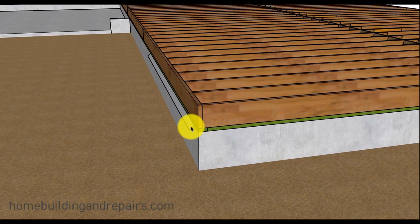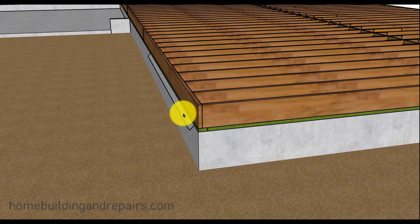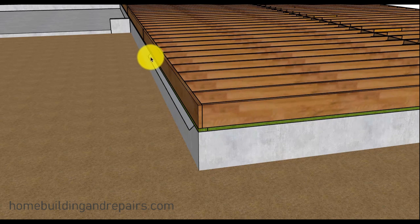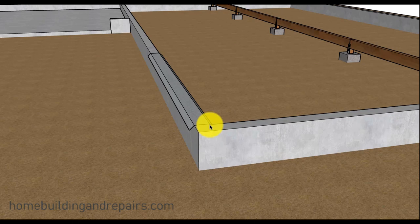And again, these termite shields in areas where you have subterranean termites, it's kind of like let's just say it costs you an extra $200 to put this metal on. And it works, well then great. But if it costs you $200 to put the metal on and you didn't gather all the information on how to put it on, then that's not going to be good.